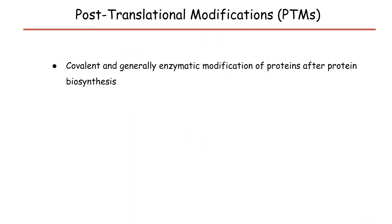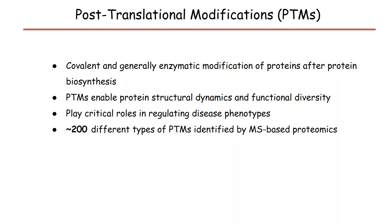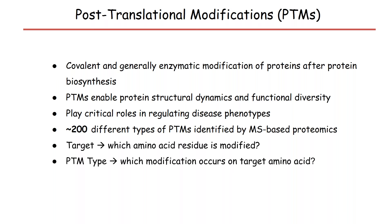Post-translation modifications, or PTMs, refer to a covalent and generally enzymatic modification of proteins after protein biosynthesis. PTMs enable protein structural dynamics and functional diversity and play critical roles in regulating disease phenotypes. There are over 200 different types of PTMs identified by MS-based proteomics. One of the key features of PTM is the target amino acid — that is, which amino acid residue is modified — and also the PTM type, that is, which modification occurs on the target amino acid.